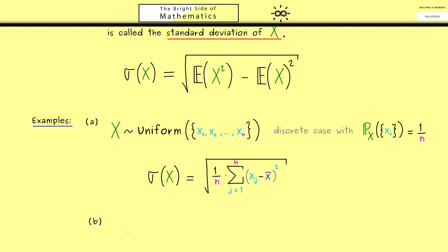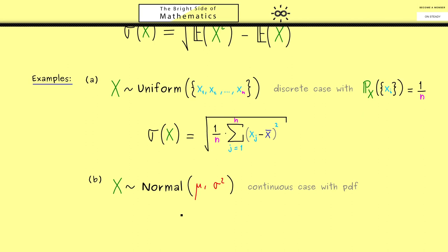On the other hand, if you are in the continuous case, another case often occurs: the normal distribution, also called the Gaussian distribution. It gets two parameters: mu and sigma squared. Because this is a continuous case, we can give a PDF to define this random variable, a probability density function we often call f with index X. For the variable, we often use lowercase x.